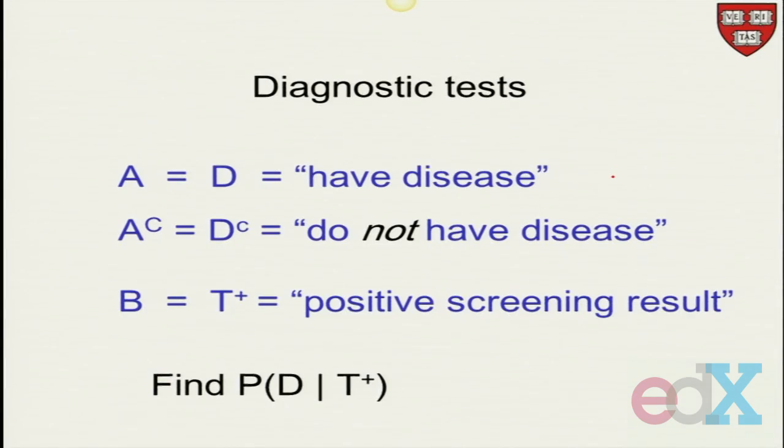So in diagnostic tests, we'll associate the event A with the event D. Let's call it D so we can remember what it stands for: have the disease. And the event A complement is the event we do not have the disease. And the event B is having had a test done and the test turns out to be positive.